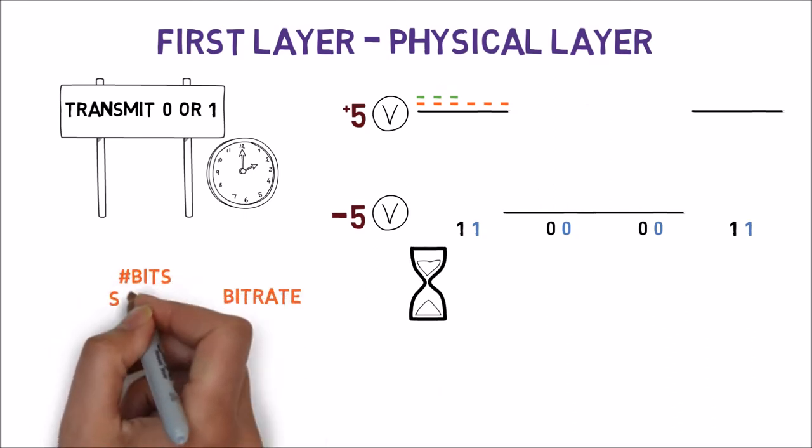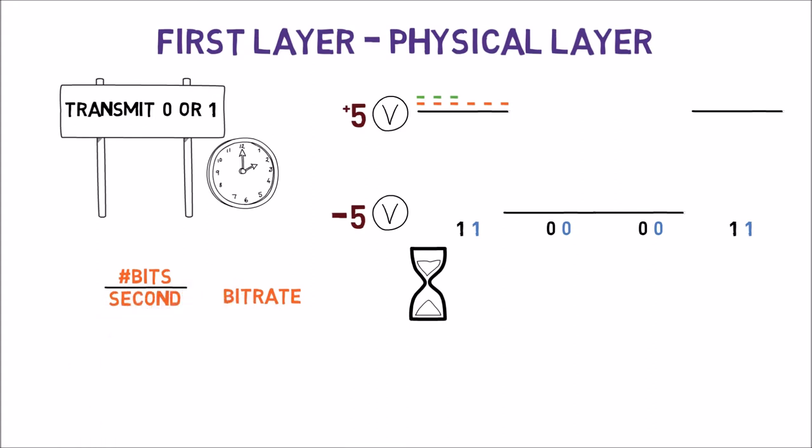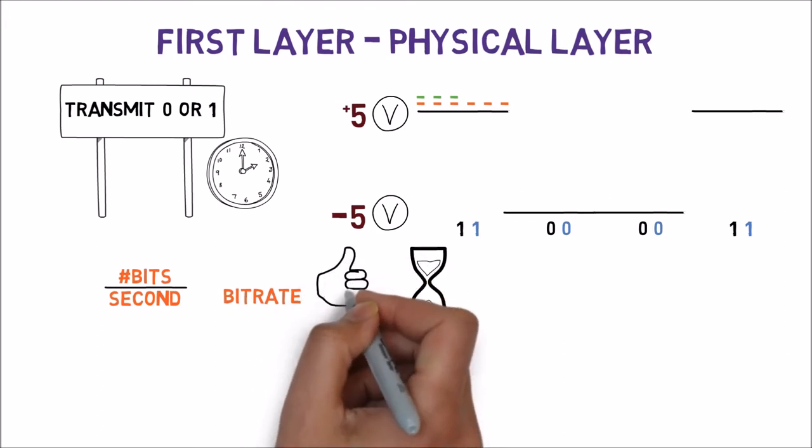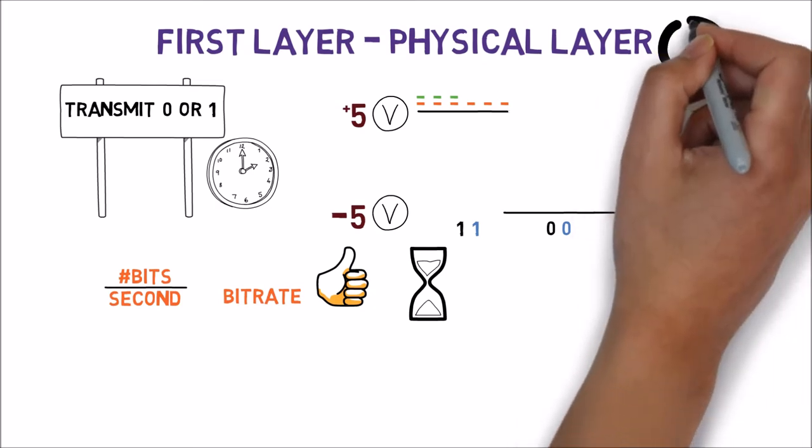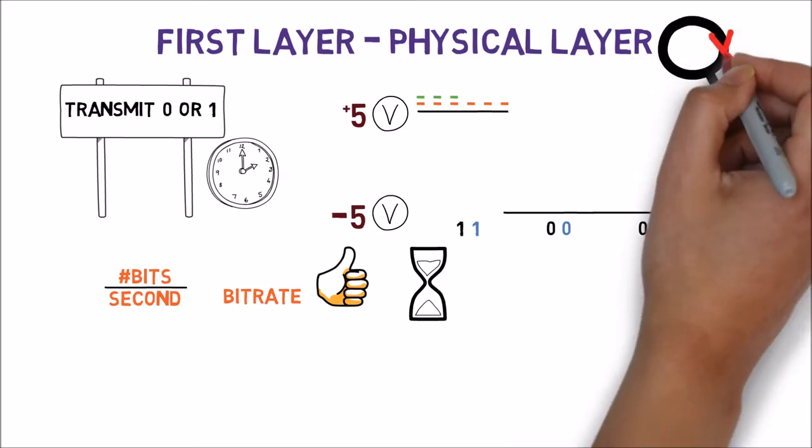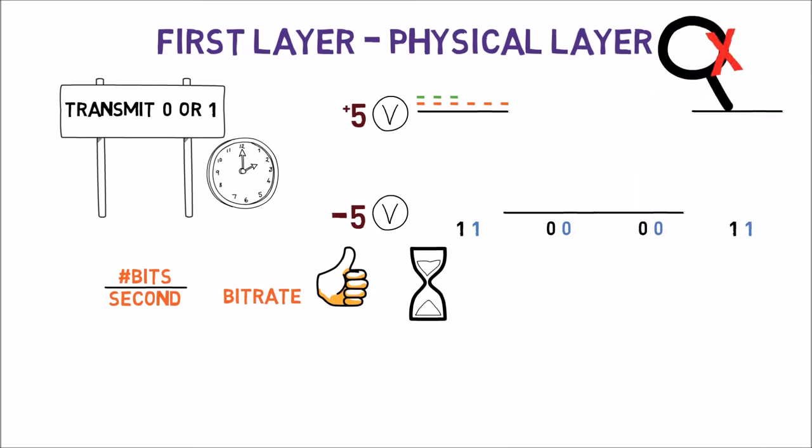Of course, achieving a high bit rate is preferable, as it means we can send many bits in a very short time frame. However, it is hard to achieve high bit rates without getting many errors. This is only one of the things that the first layer needs to take into consideration. Again, we will not focus on the first layer throughout this course. We will, however, discuss the other four layers in much depth. Let us continue to the next layer.